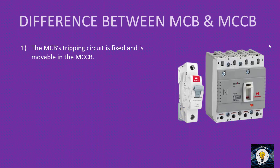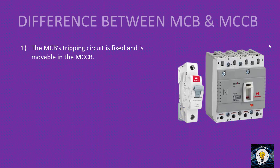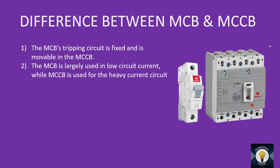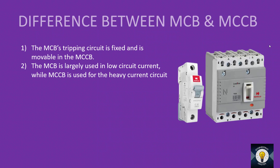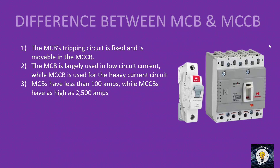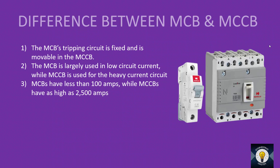What is the difference between MCB and MCCB? First, in MCB the tripping circuit is fixed, while in MCCB the tripping circuit is adjustable — this allows settings to be changed. Second, MCB is used for low-current circuits while MCCB is used for heavy-current circuits. Third, MCB has a rating of less than 100 A while MCCB is available from 16 A to 2500 A.